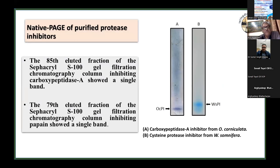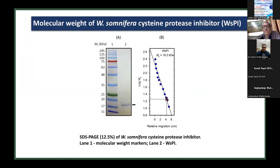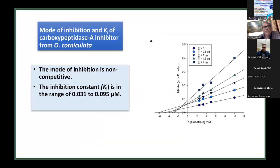Purity of the inhibitor fractions was confirmed on native PAGE, showing a single band. Molecular weights were confirmed on SDS-PAGE: the carboxypeptidase A inhibitor is approximately 17 kDa and the cysteine protease inhibitor from Withania somnifera is 18.2 kDa. The mode of inhibition was assessed by Dixon plot analysis, which showed non-competitive inhibition. The inhibitor constant (Ki), reflecting the potency of inhibition, ranges from 0.03 to 0.09 micromoles.